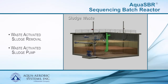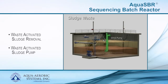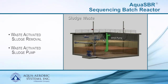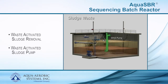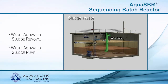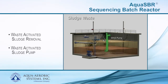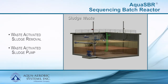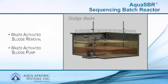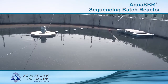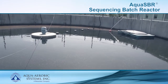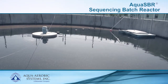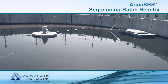In the final minutes of the Decant phase, a small amount of excess biological solids will be removed or wasted to a sludge holding facility. This process is typically accomplished with a small submersible pump which operates for only a few minutes per cycle as needed to remove the thickened sludge.